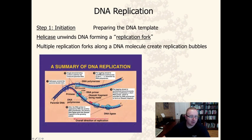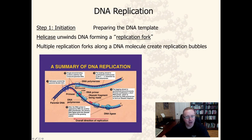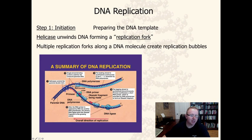Here's the summary diagram of DNA replication from page 66. In step one, the initiation process involves helicases unwinding the parental double helix. Additionally, there are special proteins called single-strand binding proteins that prevent the double helix from winding back up, keeping the DNA separated so that the replication process can continue.